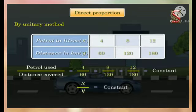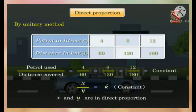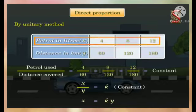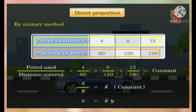The ratio x/y does not change. So in this case, we say that x and y are in direct proportion: x/y is constant, and x = k×y, where k is a constant. So consumption of petrol and distance covered are in direct proportion.